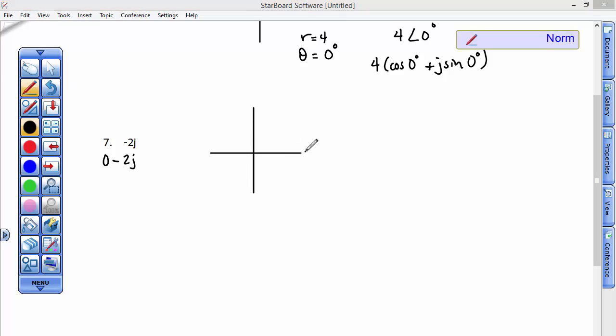this vector, here's the real, here's the imaginary axis. This vector goes nowhere in this direction, but then it goes down 2 in the imaginary direction. So its length is 2 units long. However,